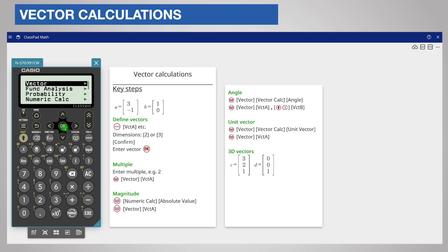pressing the catalog key, choosing vector and vector A. Remember to close the bracket and complete the calculation by pressing the execute key.